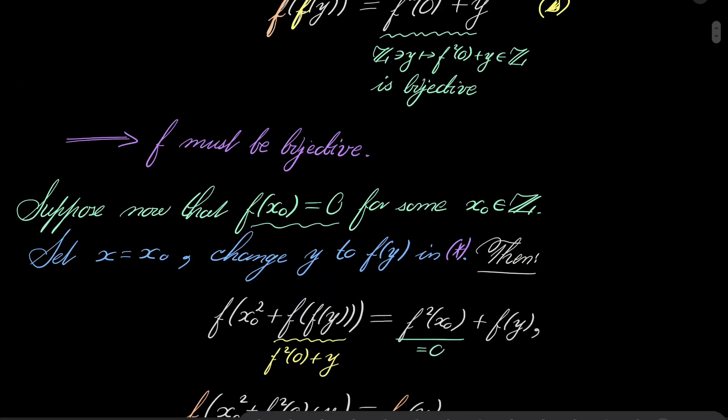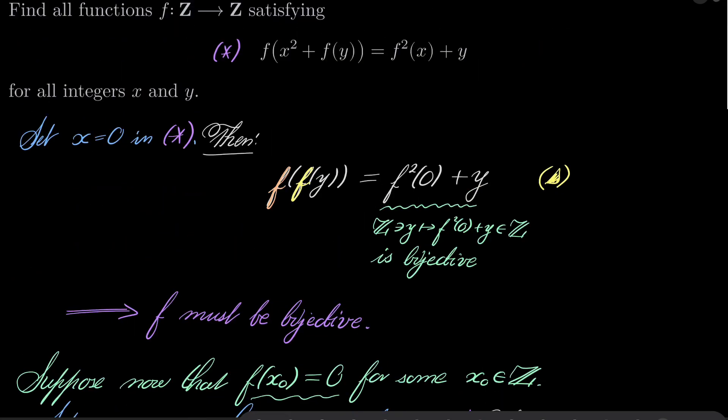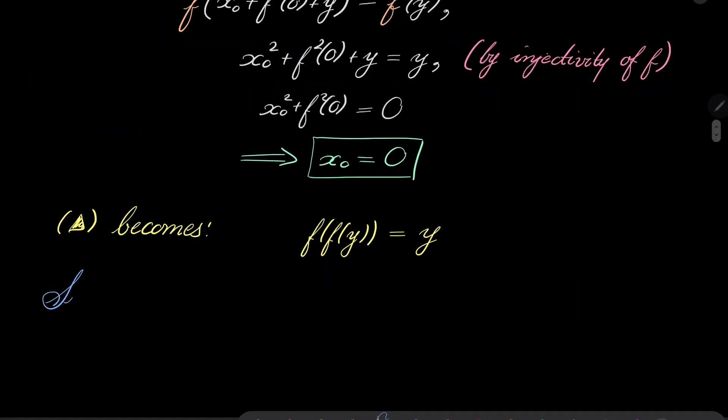And let's now set something else. Let's now set x to be 1 and y to be 0 in our condition asterisk. What then? Then we have f of 1 squared, but it's 1. So, f of this plus f of 0 equals f squared of 1 plus 0.